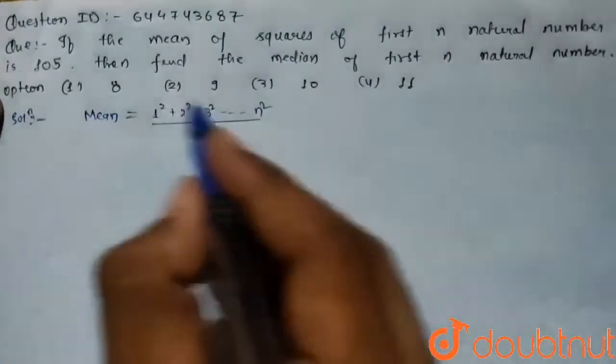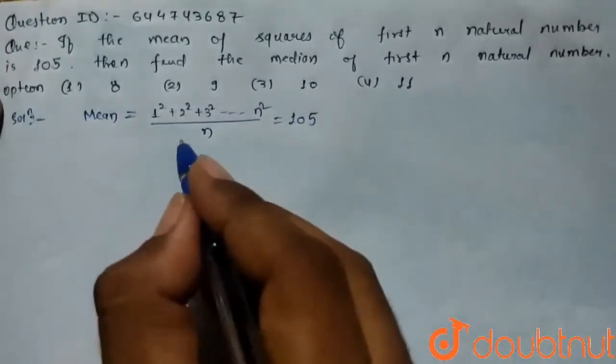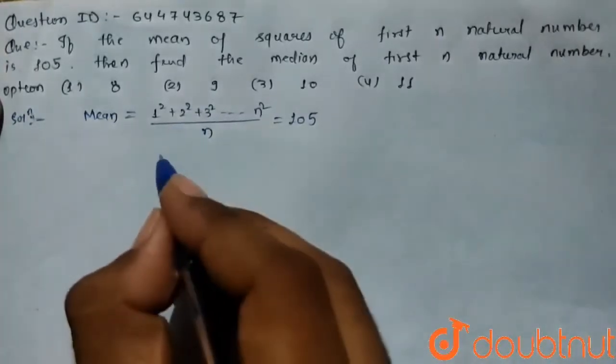Mean is given as 105. Here, the summation of first n natural number squares equals...